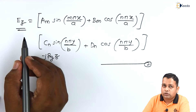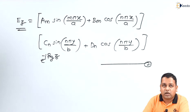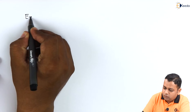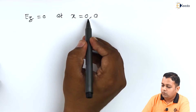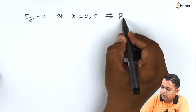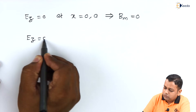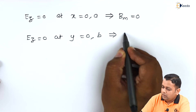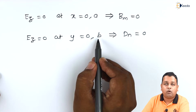The solution for Ez must satisfy the boundary conditions at the different walls — the bottom wall, the two side walls, and the top wall of the rectangular cavity. Applying the boundary conditions: Ez equals zero at x=0 and x=a (left and right walls), which results in the constant Bm equal to zero. Also, Ez equals zero at y=0 and y=b (bottom and top walls), implying the coefficient Dn equals zero.